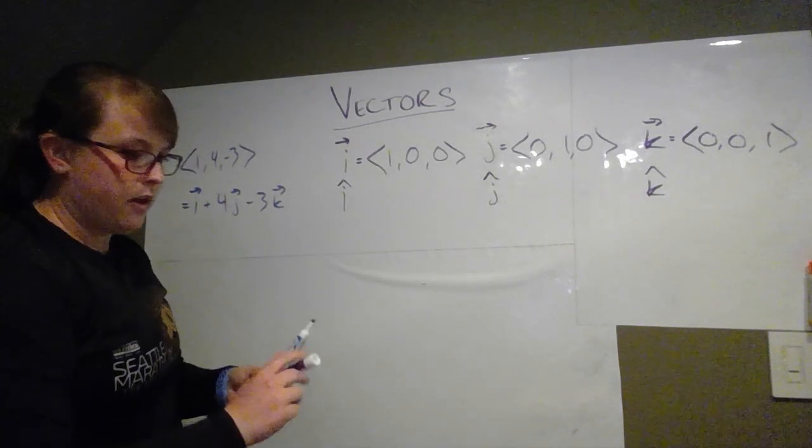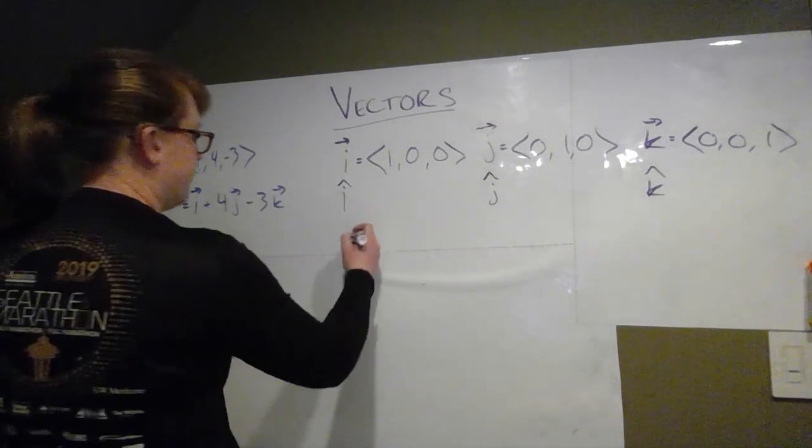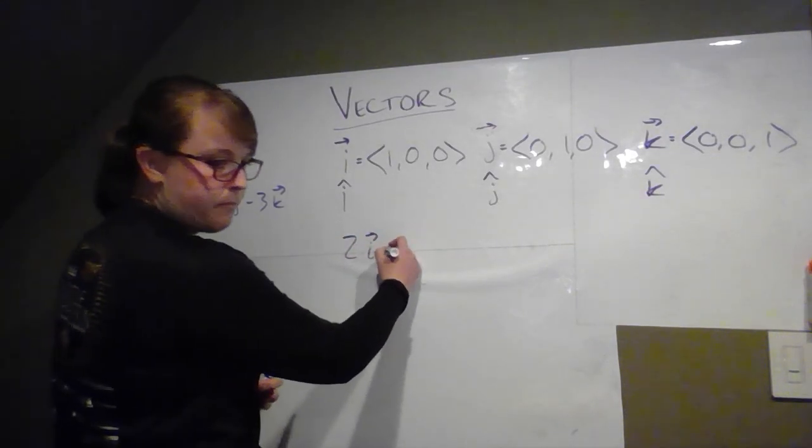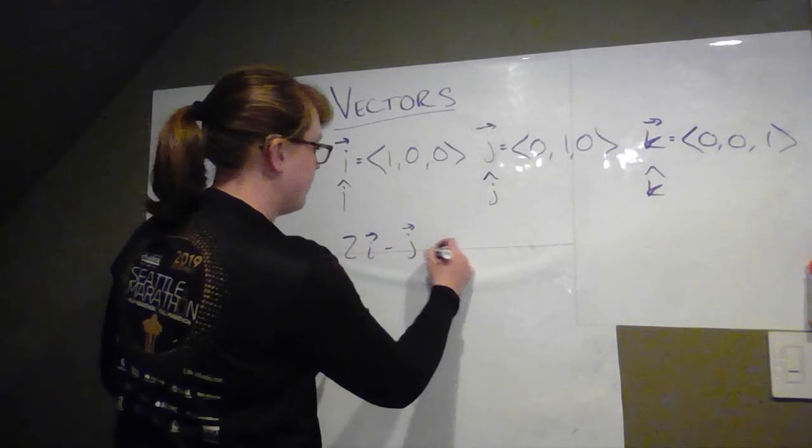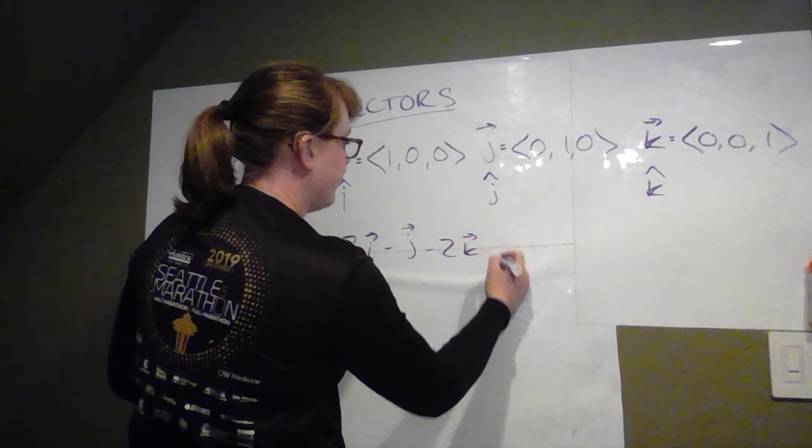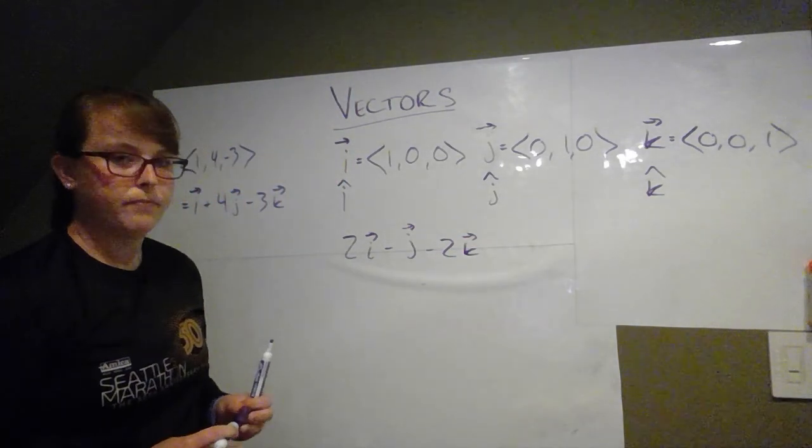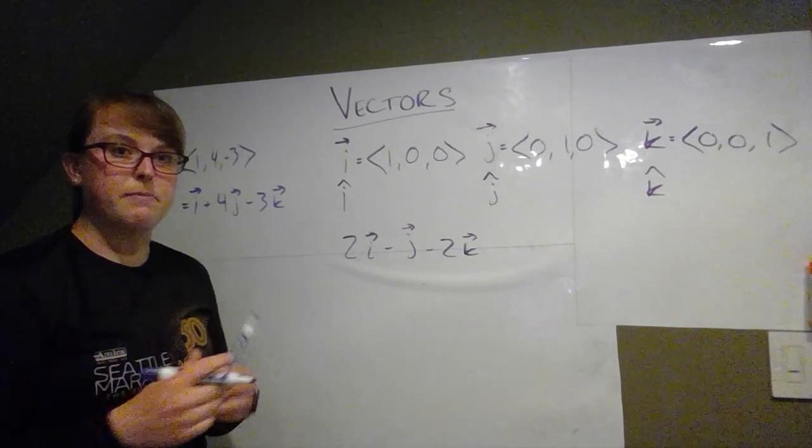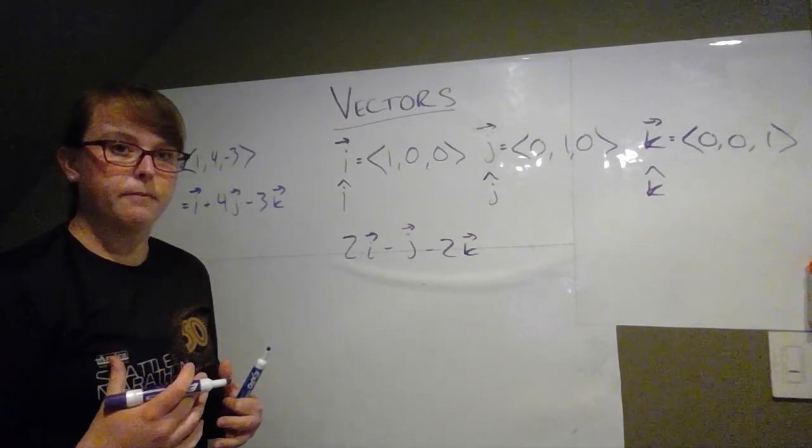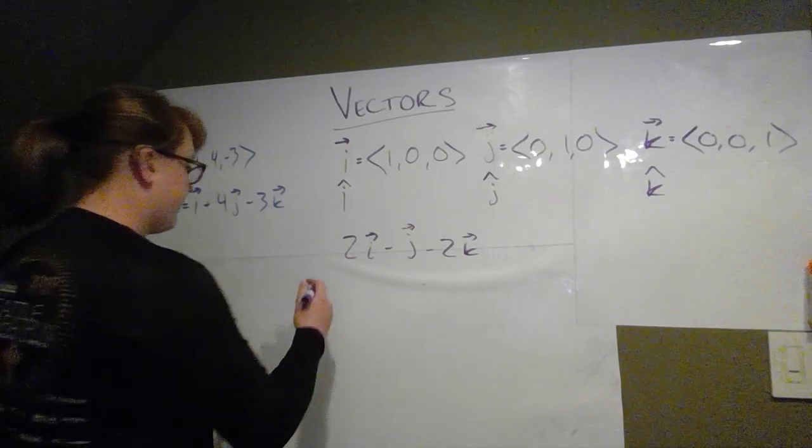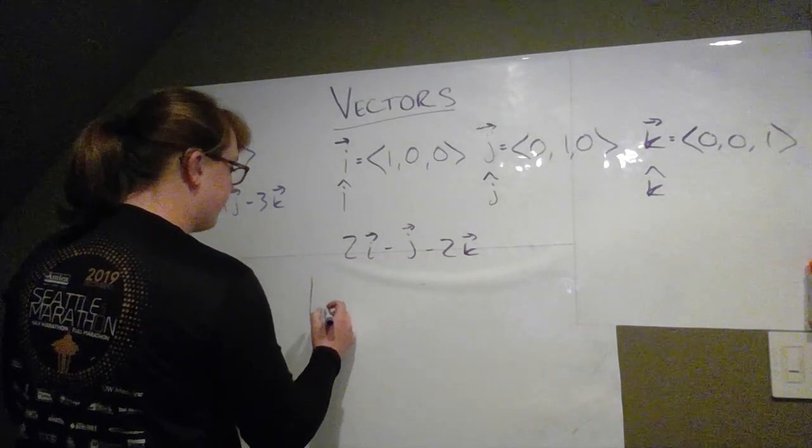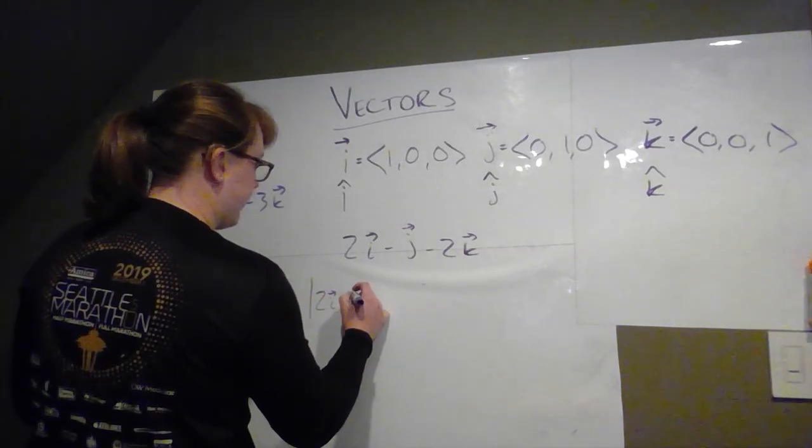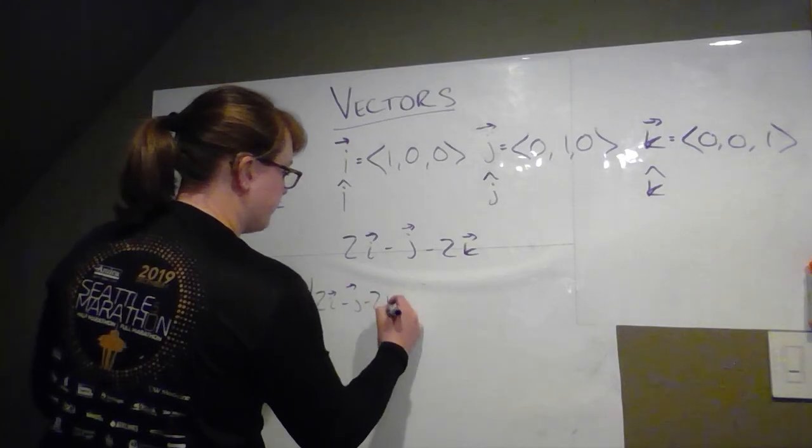So for example, let's say we're going to make 2i minus j minus 2k into a unit vector. So it's going to have magnitude of 1 but it's going to be in the same direction that it was before.